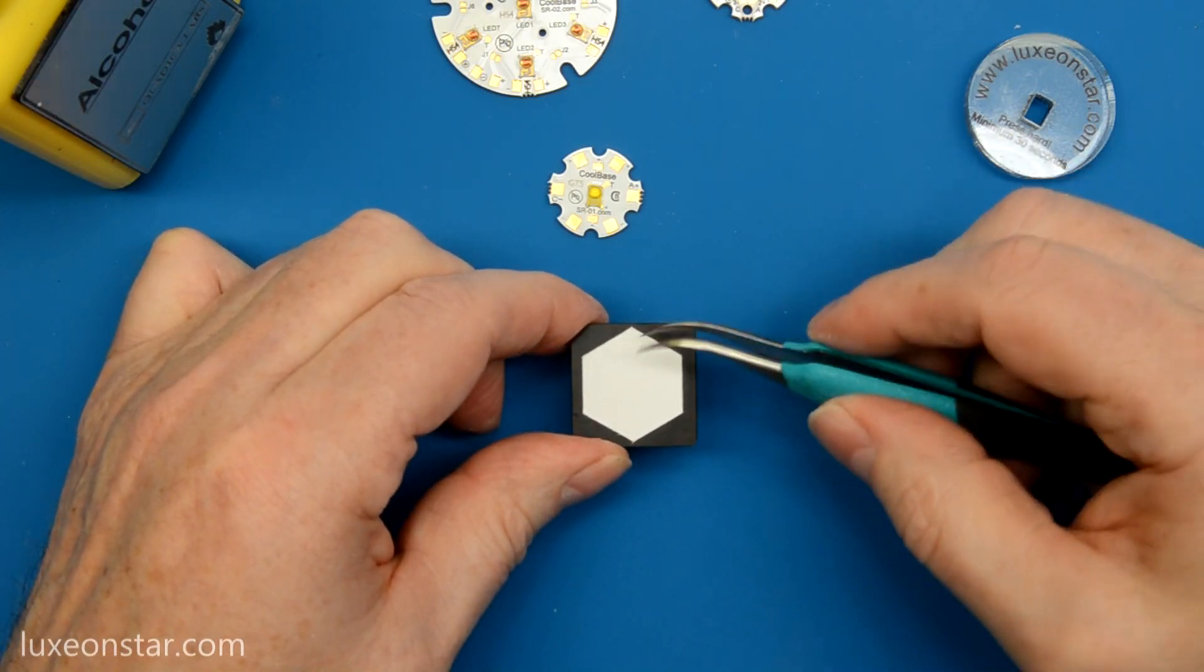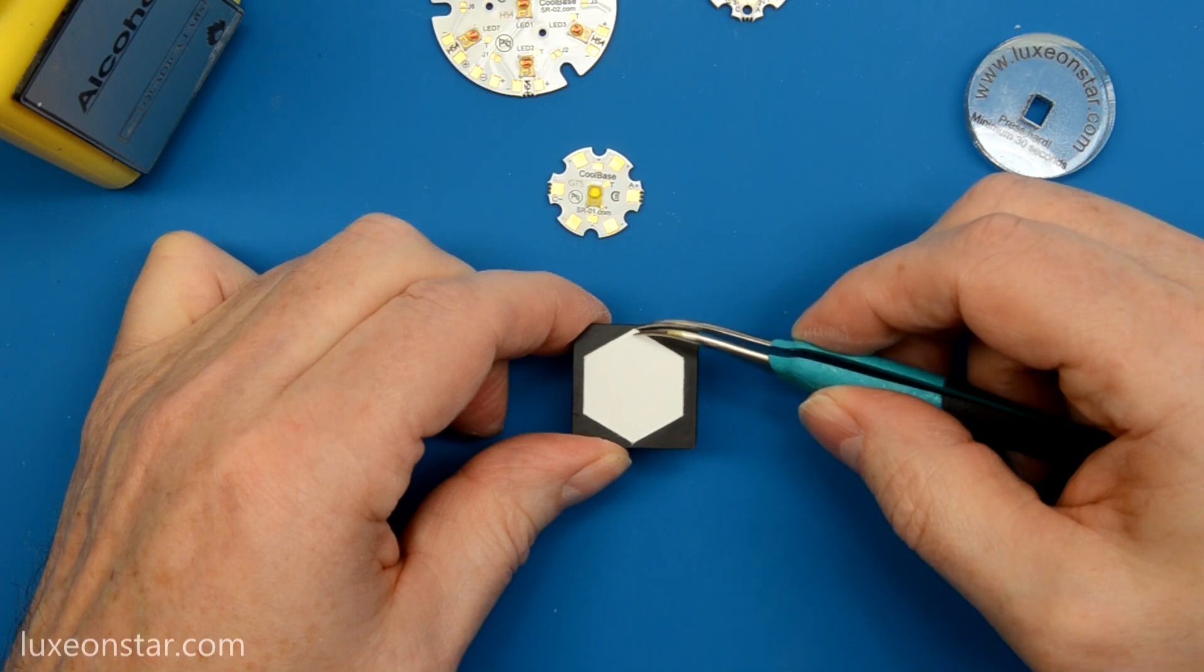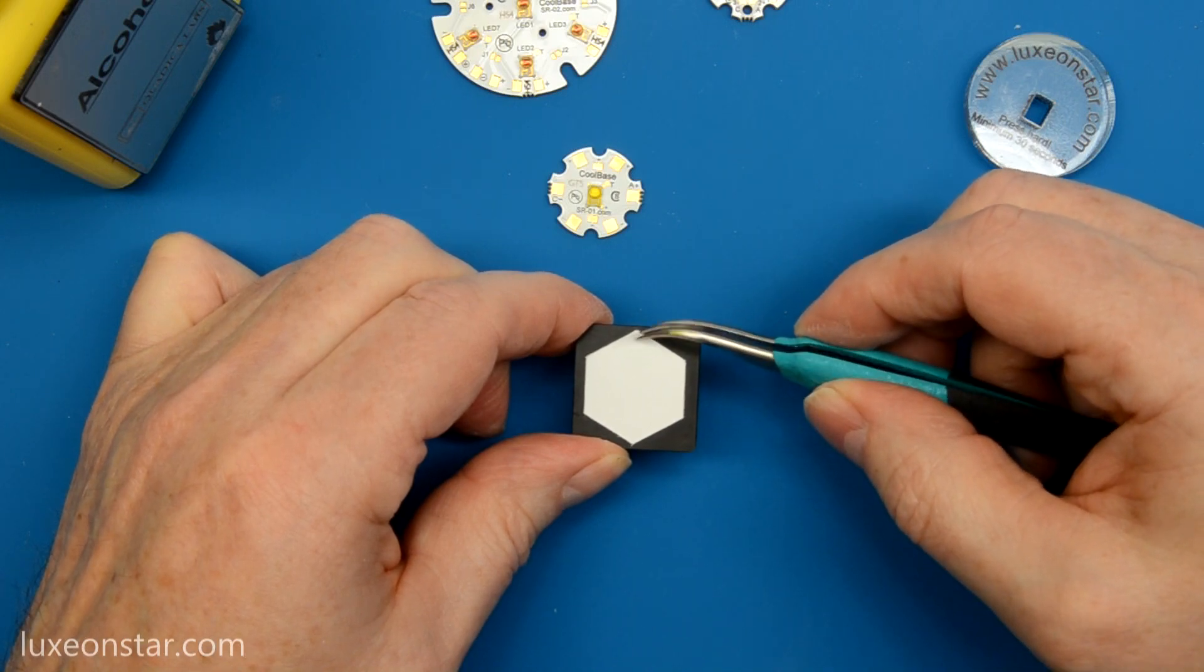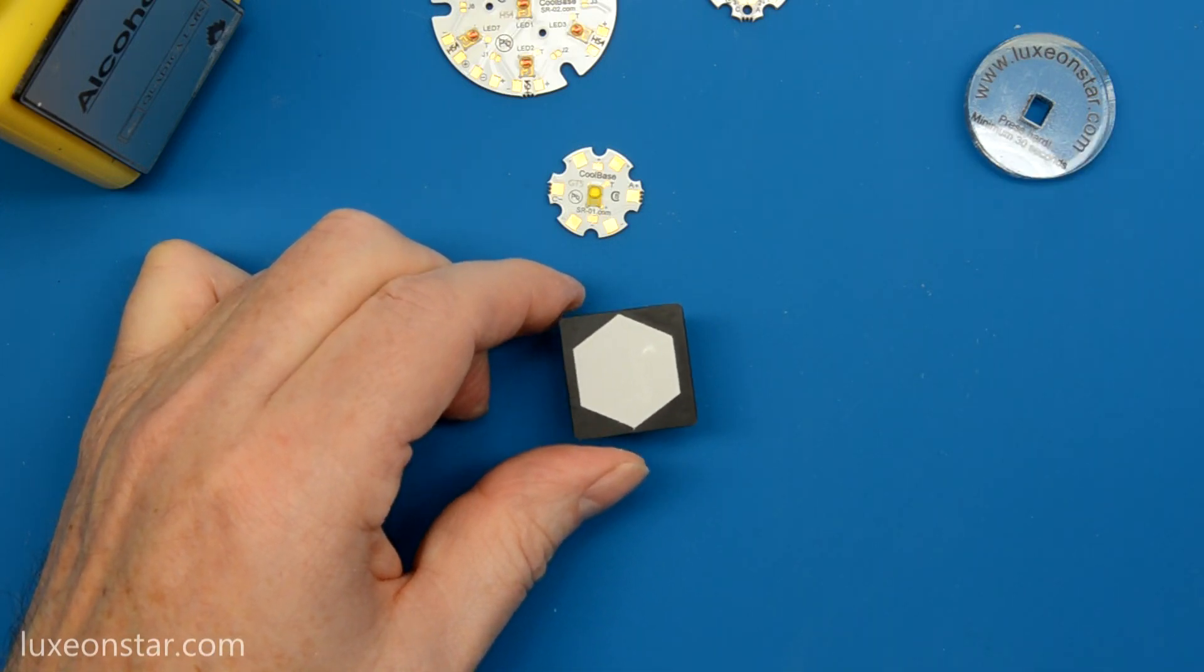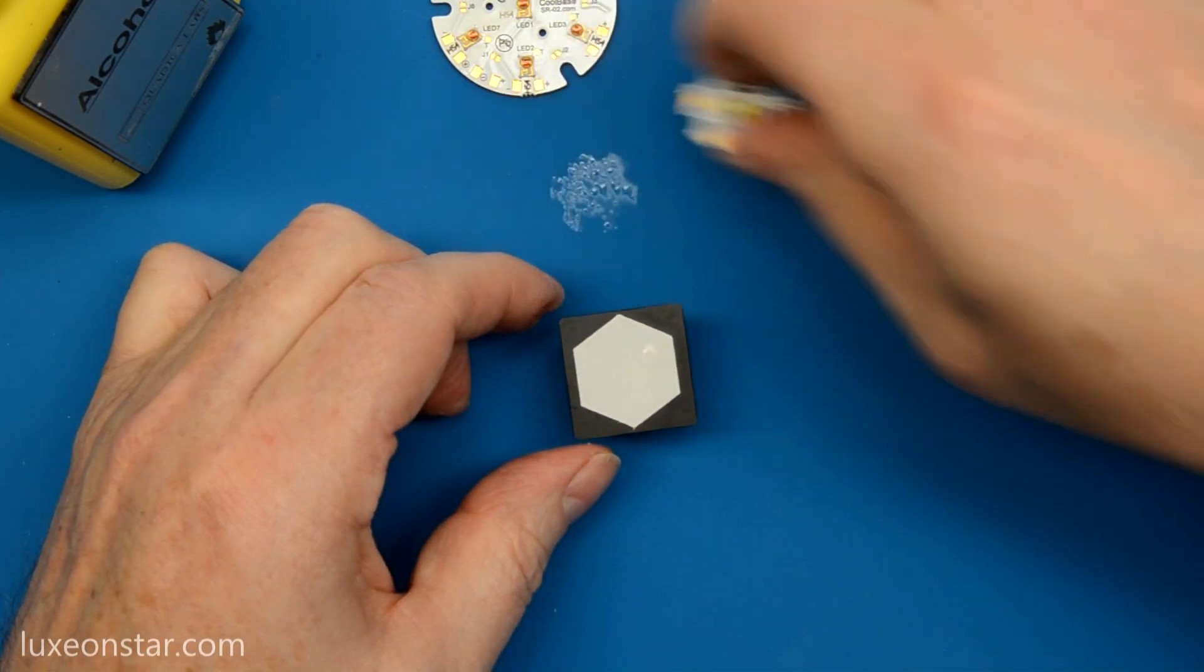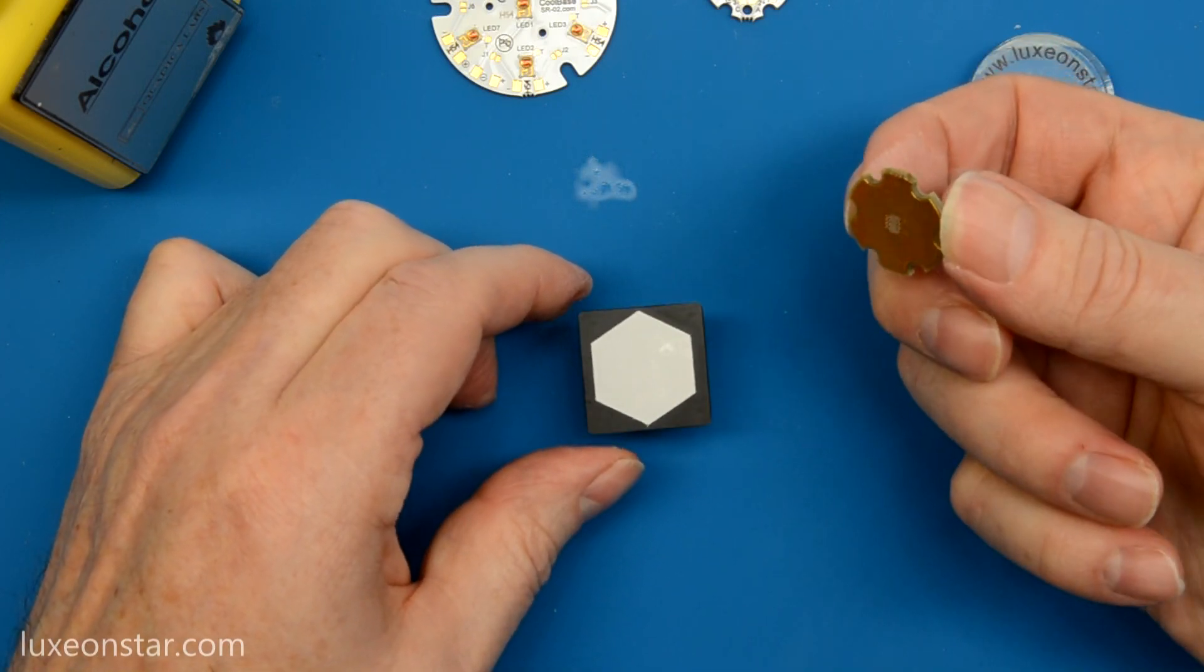Then we want to remove the paper backing from the thermal pad and take your LED assembly. Make sure it's nice and dry.